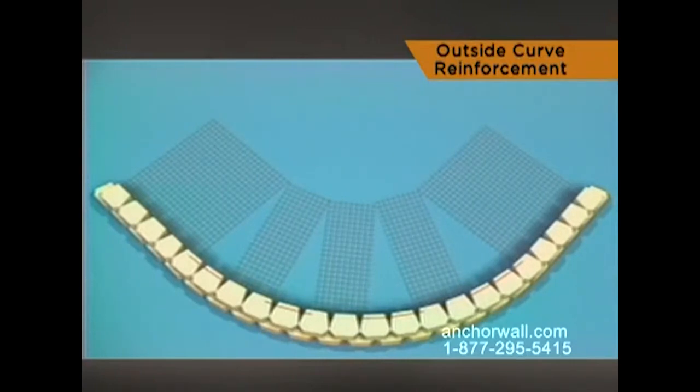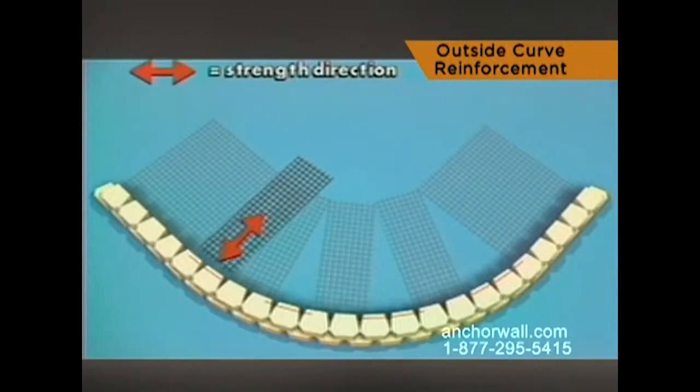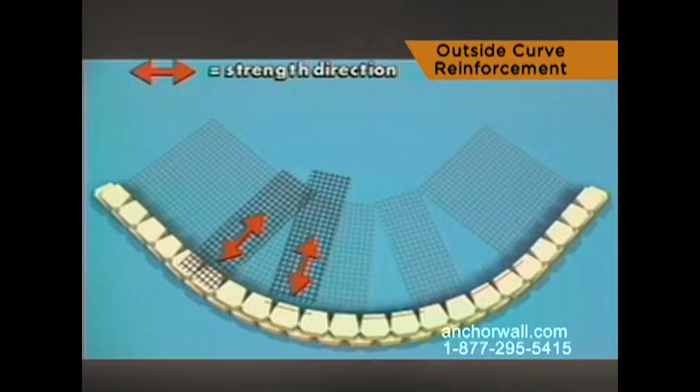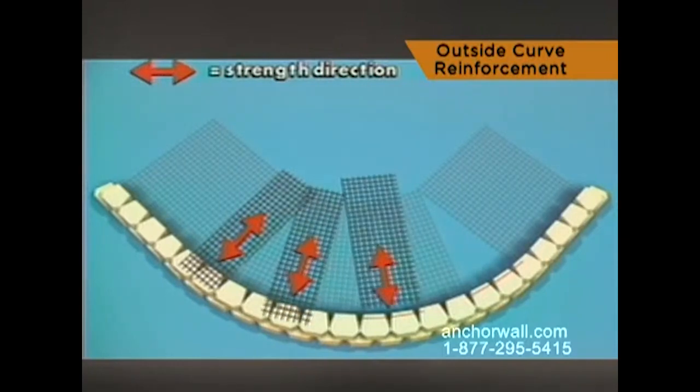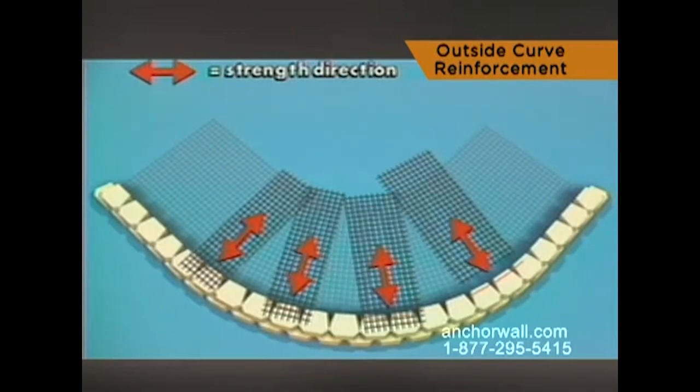Place sections of reinforcement to overlap the gaps left on the previous course. These steps will help ensure total reinforcement coverage. Repeat this procedure throughout the construction of the radius curve when reinforcement is required.